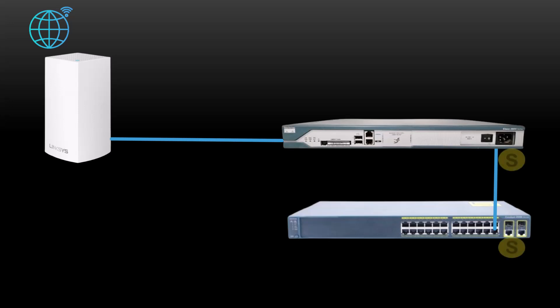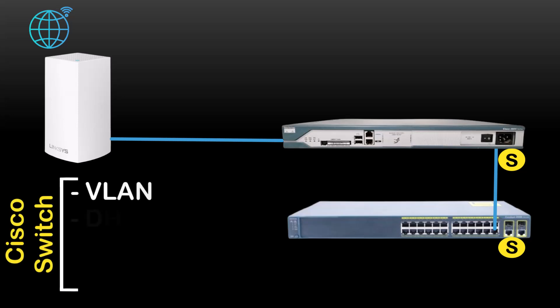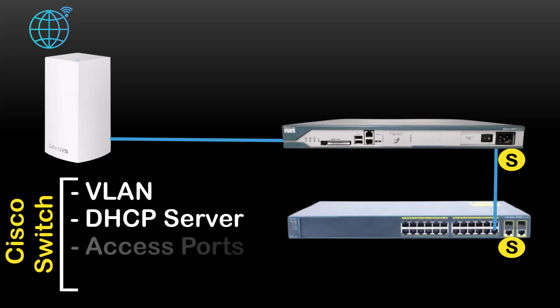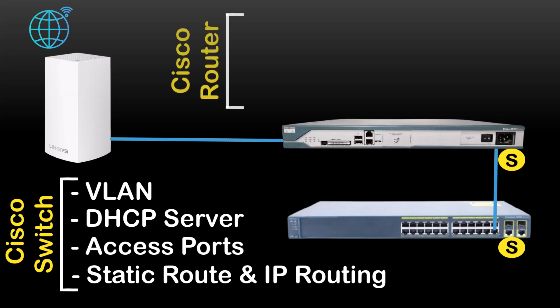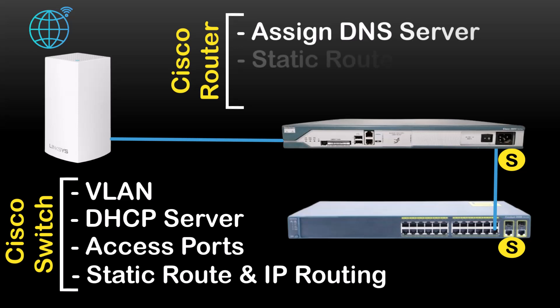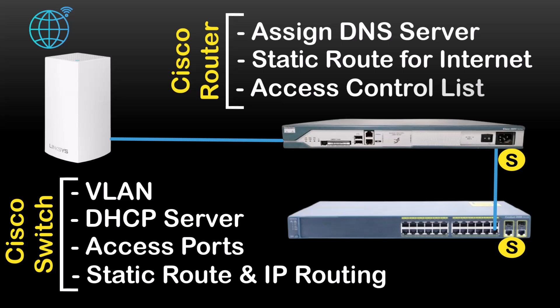Then I'll configure static IPs on these interfaces. Here's what I'll cover in this video: creating VLANs, configuring a DHCP server to assign IP addresses automatically, configuring access ports on the Cisco switch, and setting up a static route and enabling IP routing on the Cisco switch. On the Cisco router side, I'll show you how to assign a DNS server, configure a static route for internet connectivity, and set up an access control list. Finally, we'll test the internet service on VLAN20 by connecting a laptop to the Cisco switch.